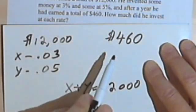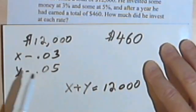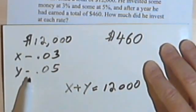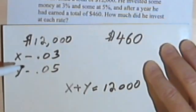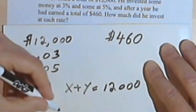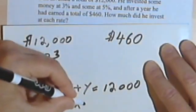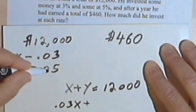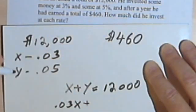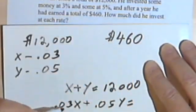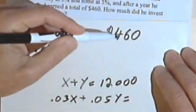Now I need another equation. He earned $460 total. Some of that came from the 3% investment and some came from the 5% investment. So if we multiply the amount of money he invested at 3% times the percentage, that will tell me what his interest was for that. So 0.03 times the amount of money he invested, plus 5% of the amount of money he invested at 5%, so 0.05y, and the two amounts of interest together were $460.